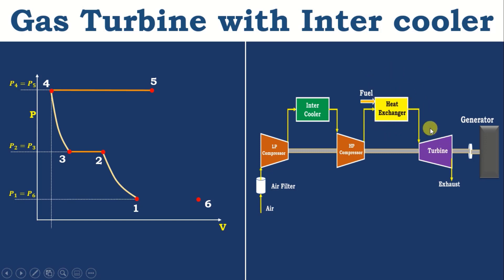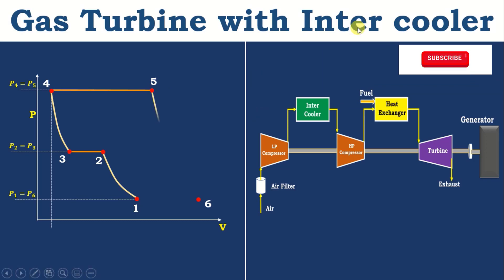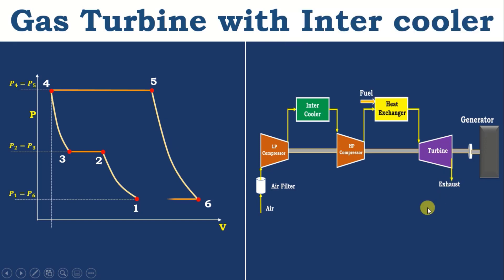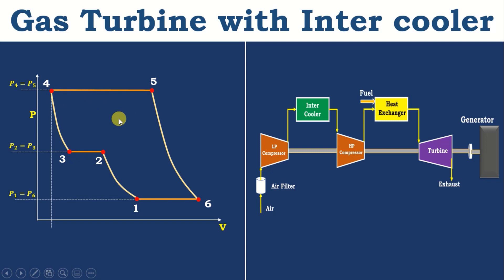After that, it passes to the turbine in which the air is expanded, where pressure and temperature drop. So 5 to 6 is isentropic expansion in the turbine. So we have: 1 to 2 isentropic compression in low pressure compressor, 2 to 3 constant pressure heat rejection in intercooler, 3 to 4 isentropic compression in HP compressor, 4 to 5 constant pressure heat addition in combustion chamber, 5 to 6 isentropic expansion in turbine.